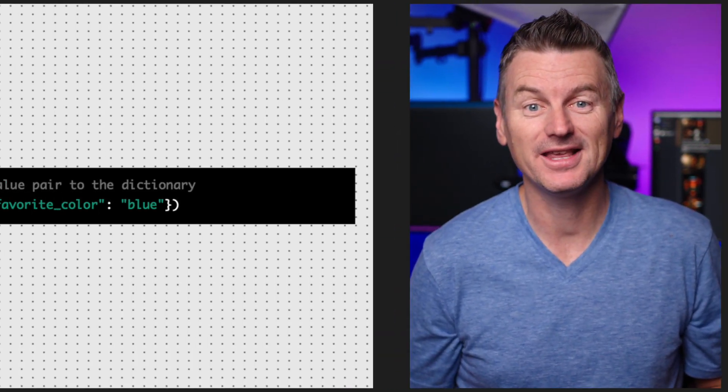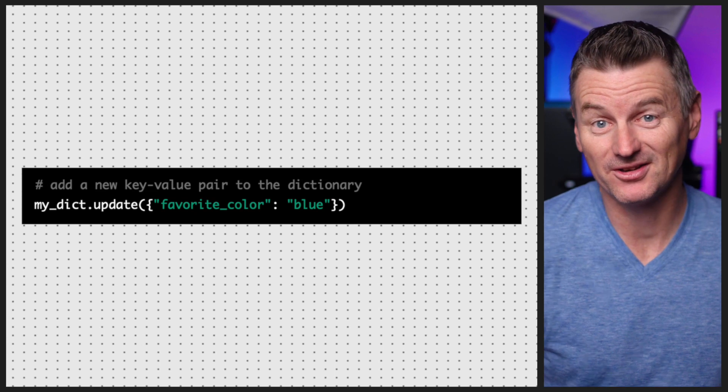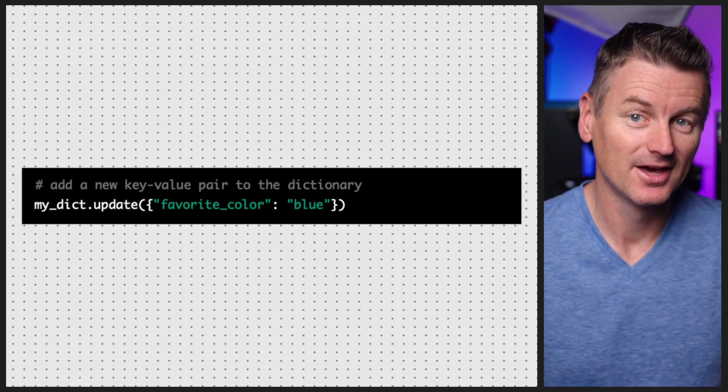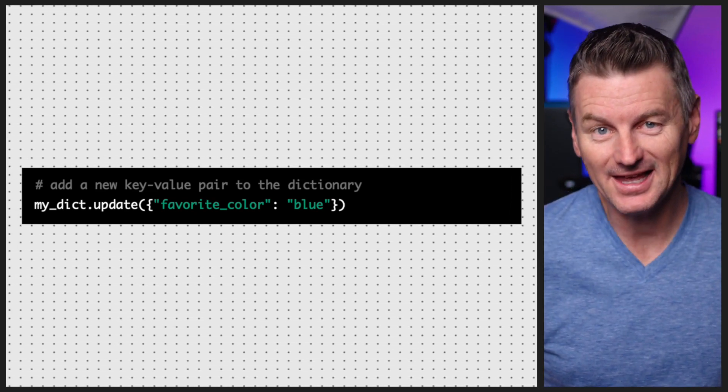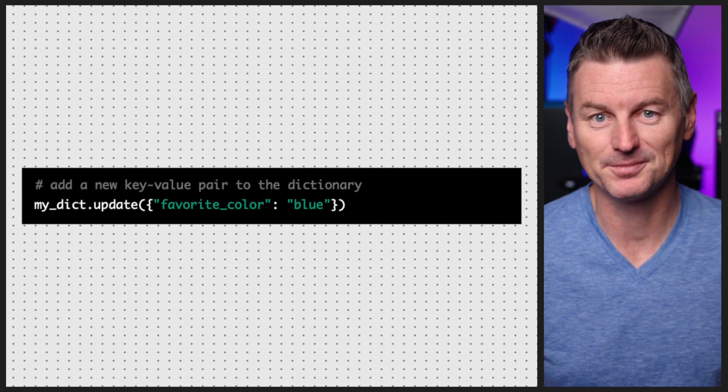One of the most common operations you'll need to perform with dictionaries is adding and removing items. To add a new key-value pair to the dictionary, you can use the update method. For example, you can add a new key-value pair to my_dict where the key is 'favorite color' and the value is 'blue'.